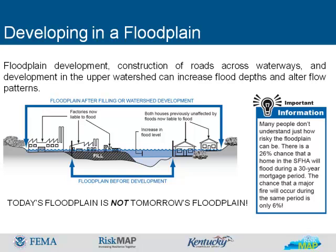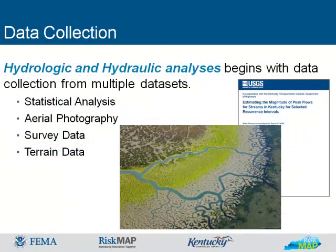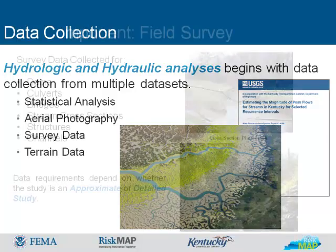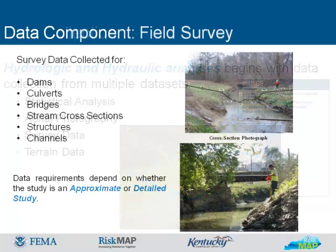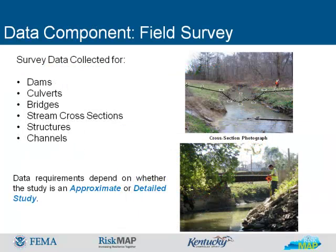The chance that a major fire will occur during the same period is only 6%. Hydrologic and hydraulic analysis begins with data collection for multiple data sets, such as statistical analysis documents, aerial photography, and survey and terrain data. The mapping process begins with the collection of multiple data sets.